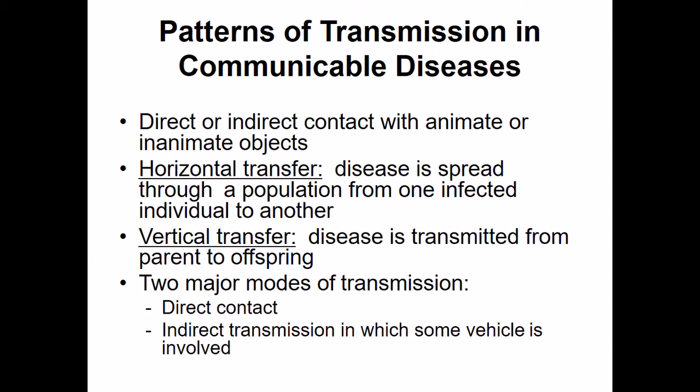Let me define some key terms about how we can transmit these diseases. We have horizontal and vertical transfer. Vertical transfer is going to be from parent to offspring — a generational transfer. Horizontal transfer is going to be from one member of the population to another. For example, if my mom gave me a disease, that would be vertical transfer. If I gave your mom a disease or your dad gave me a disease, we'd still call that a horizontal transfer because there's no familial relationship there.